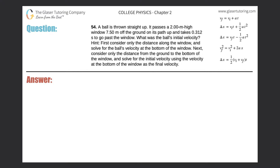Problem number 54: a ball is thrown straight up. It passes a two-meter-high window that is 7.5 meters off the ground on its path up, and takes 0.312 seconds to go past the window. What was the ball's initial velocity? Let's work without hints and just draw a picture.